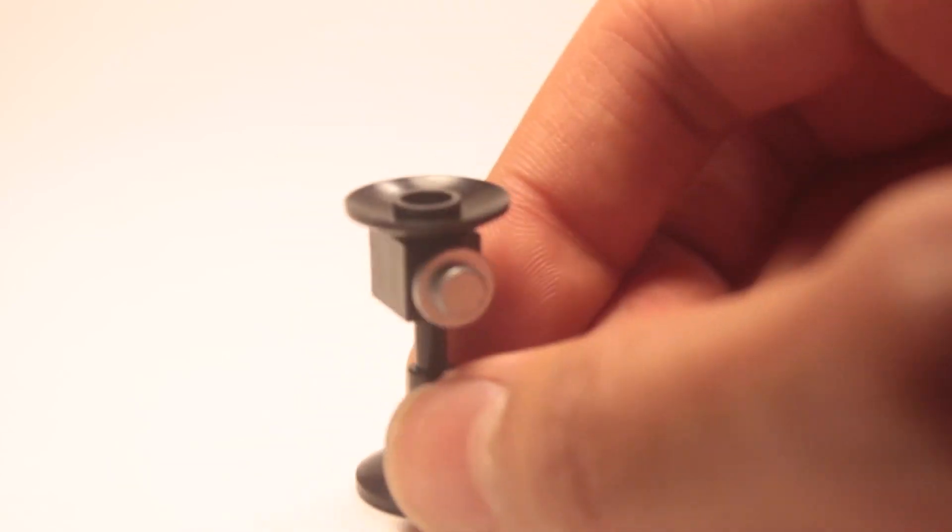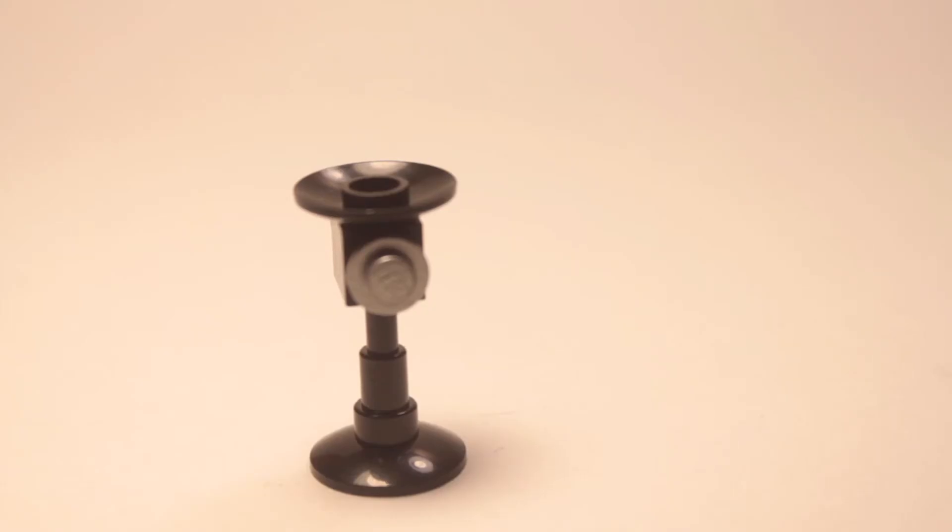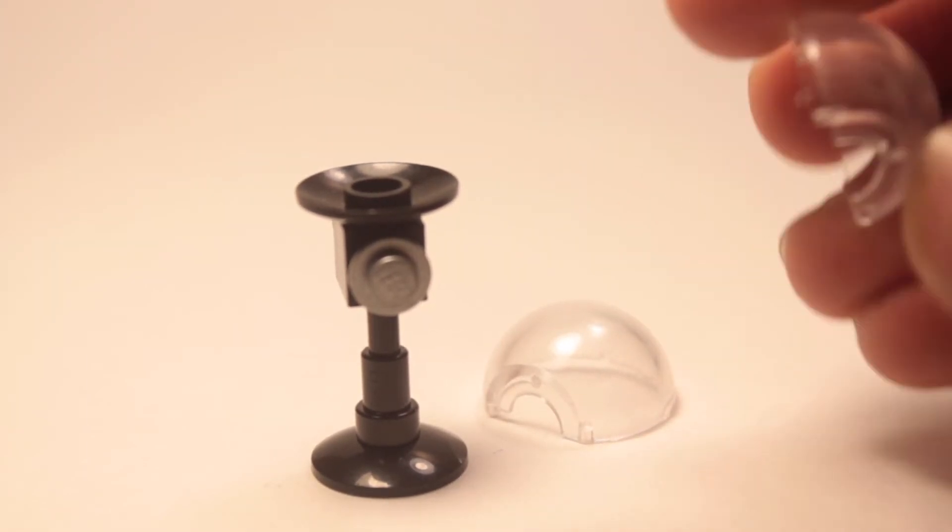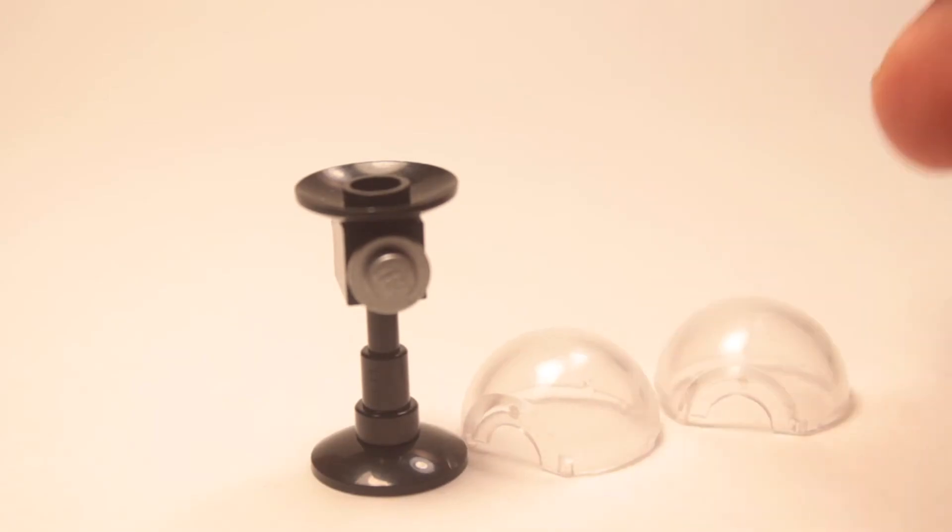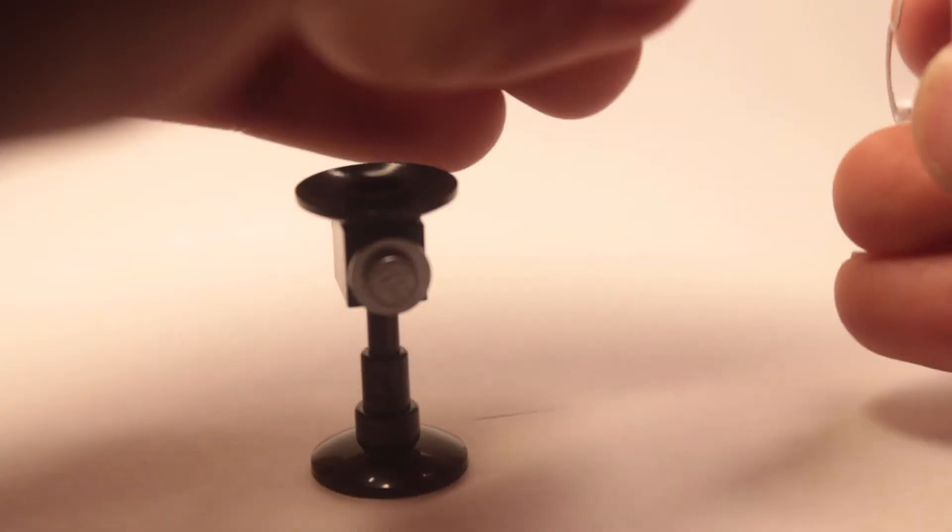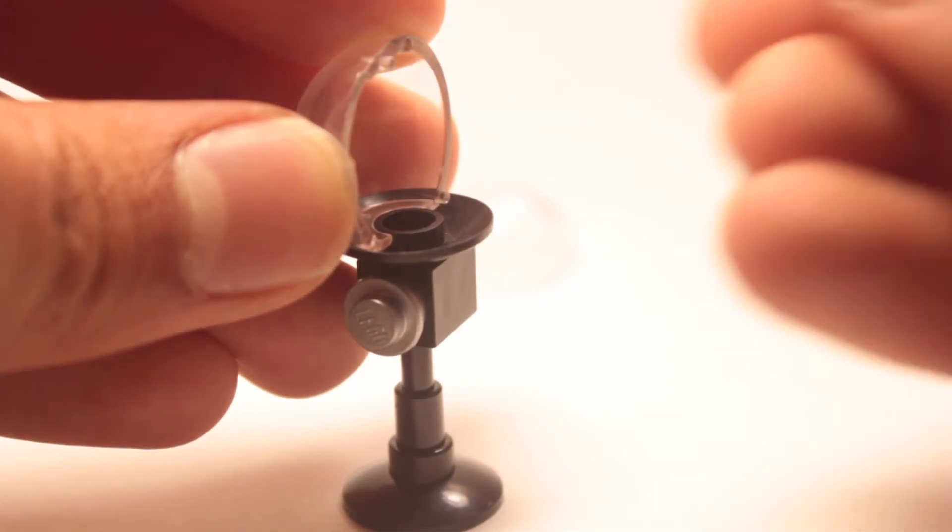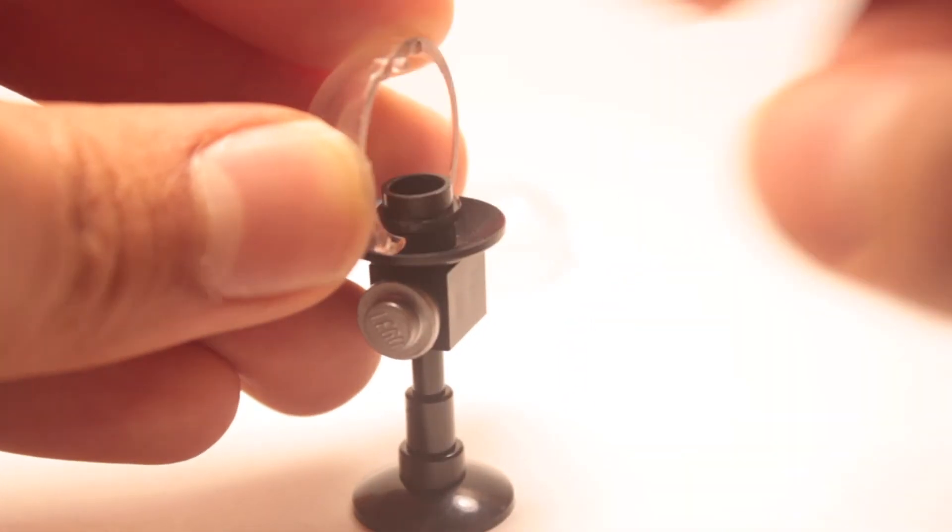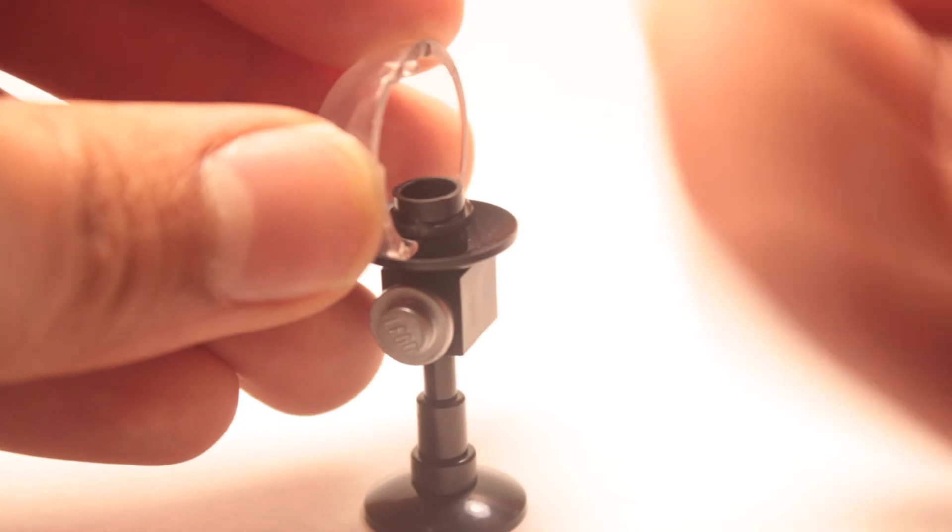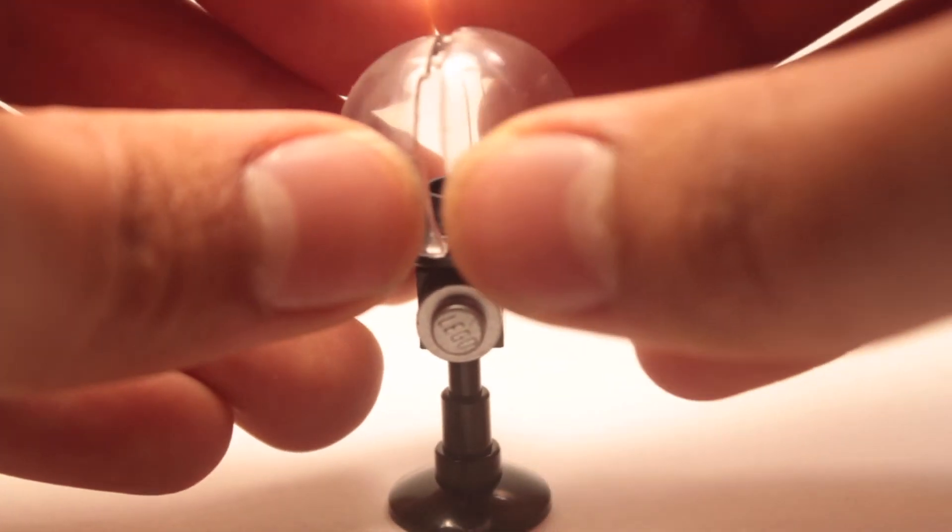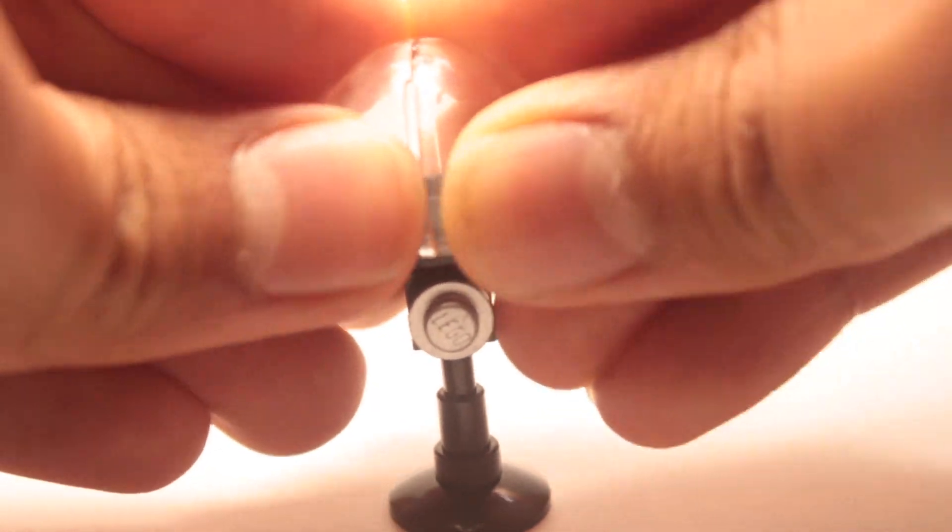Next you're gonna grab two of these little guys right here. These are like semi ball pieces, this is one half. You're gonna get two of these little ball pieces here. You're gonna get your first half and place it just like so. You're gonna get a stud and place that on top just like so. Be very super gentle, it's not really time to be playing around.